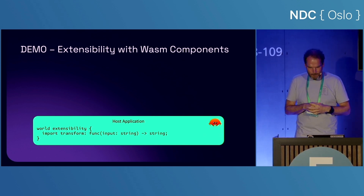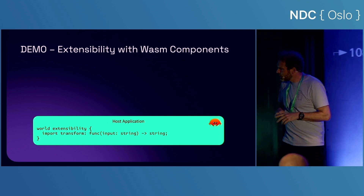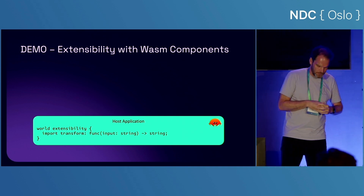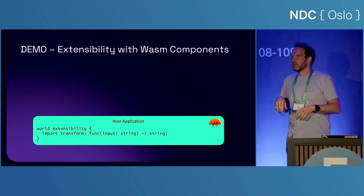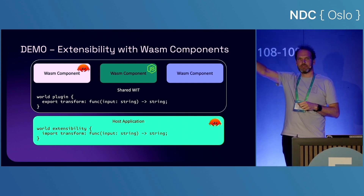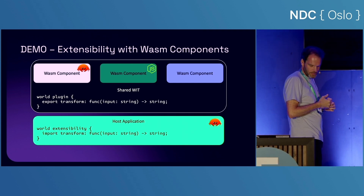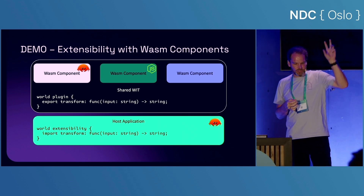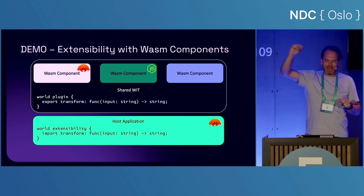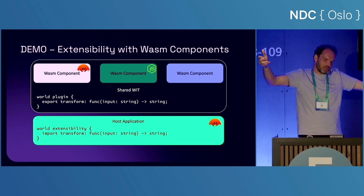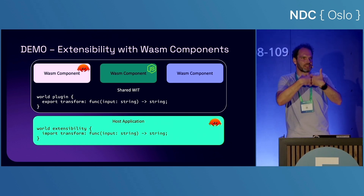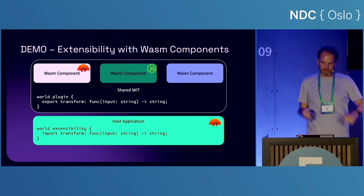The host has a WIT definition specifying that it's looking for implementations of a function called 'transform' that takes a string and returns a string. This is the WIT — the WebAssembly Interface Type language. On the other side, I have three different implementations of that function: something written in Rust, something written in JavaScript, and ideally one in C# (though that will be there tomorrow). Each implementation describes its world as a plugin world and exports the function called 'transform' taking a string and returning a string. The host application dynamically loads these various transforms as it runs.